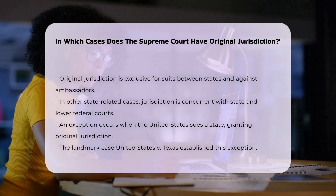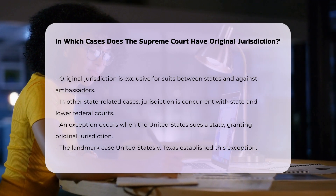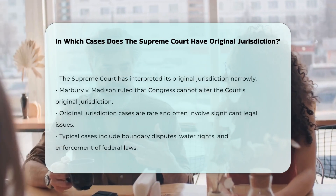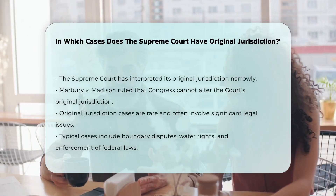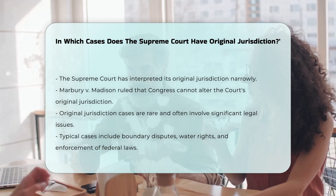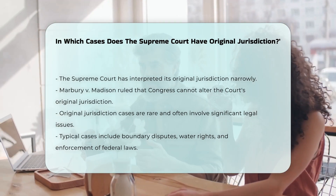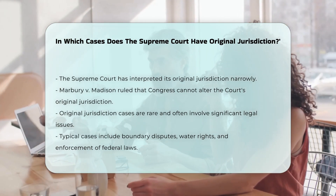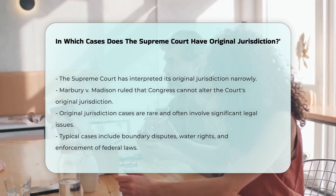The Supreme Court has narrowly interpreted its constitutional grant of original jurisdiction. For instance, in Marbury v. Madison, the court ruled that Congress cannot expand or contract the court's original jurisdiction beyond what is granted in the Constitution.